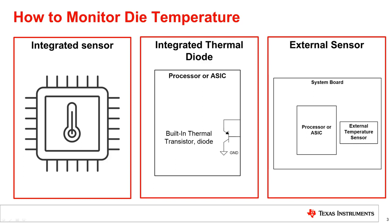The last method is by using an external temperature sensor. The location of the sensor is not ideal using this method because the temperature sensor is not integrated into the die. When using these devices, errors will not be dependent on the processor's die variation, but caused by poor thermal paths from the die to the sensor. In this video, we'll cover how to use an integrated thermal diode and an external temperature sensor.